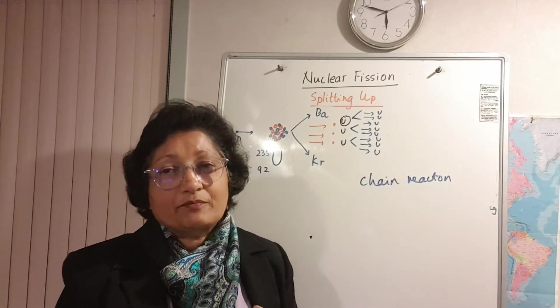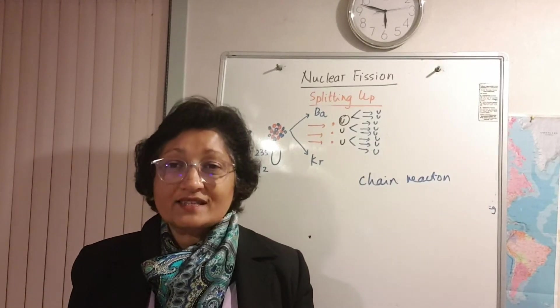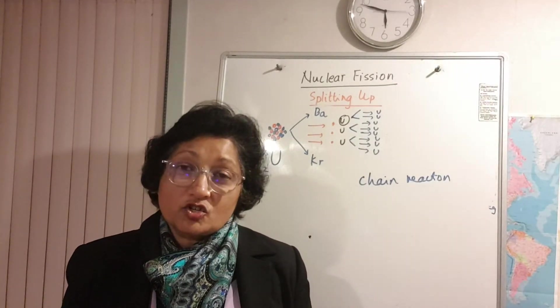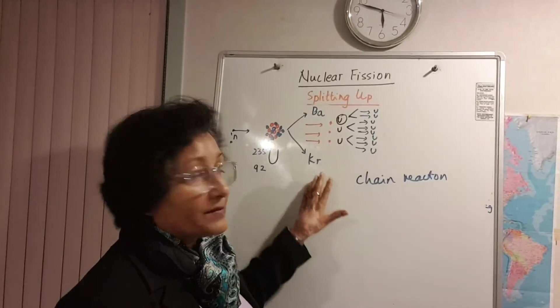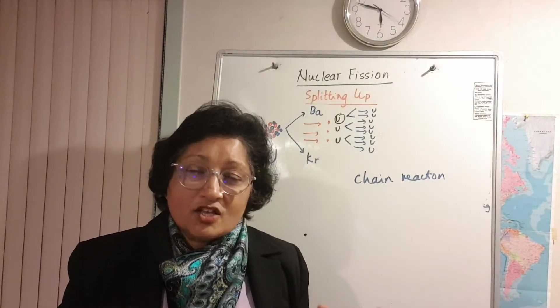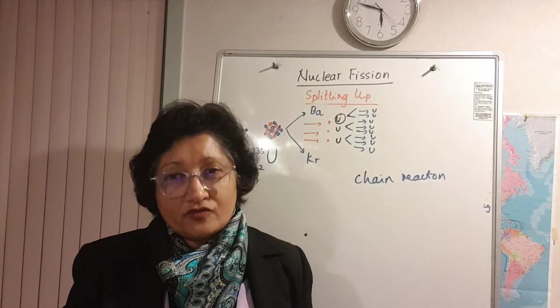So when the products are more stable it means the nucleons of the products have got greater binding energy. So the nucleons themselves of barium and krypton are at lower energy levels, so you've got to put energy into them to free them.